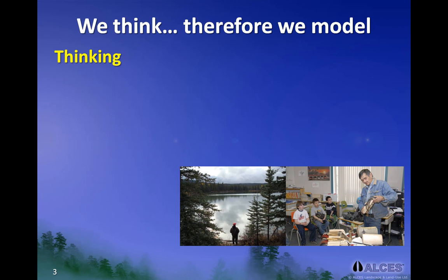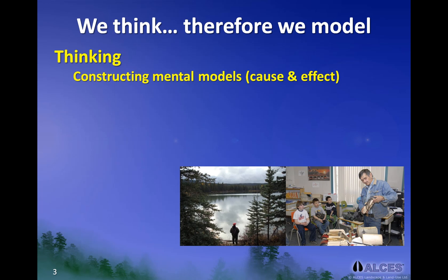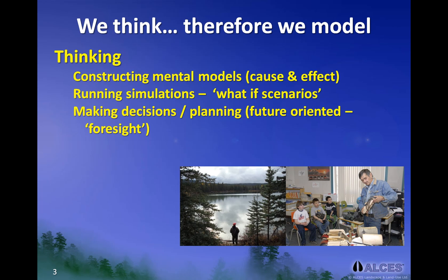For example, when we think about the world around us, we are often doing one of three things: constructing mental models or cause-and-effect relationships; running simulations or what-if scenarios of plausible events in our heads; or making decisions and planning, which are future-oriented exercises that require our foresight.